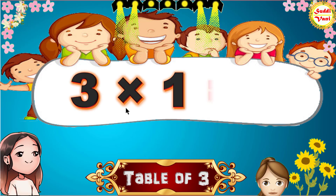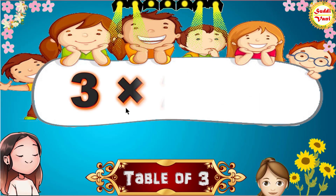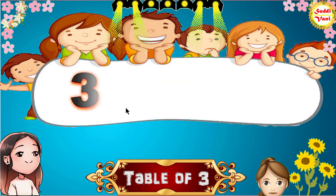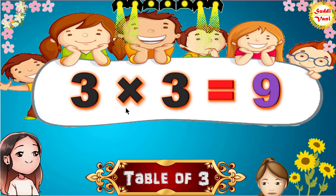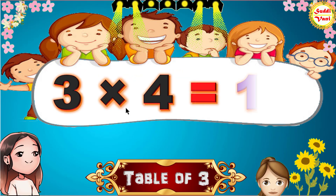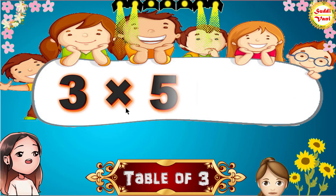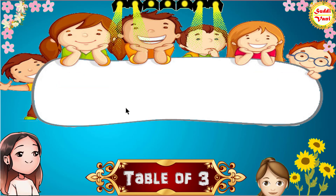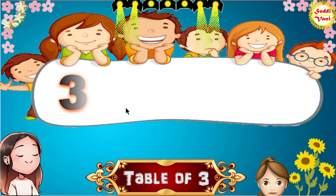3 1s are 3, 3 2s are 6, 3 3s are 9, 3 4s are 12, 3 5s are 15, 3 6s are 18.